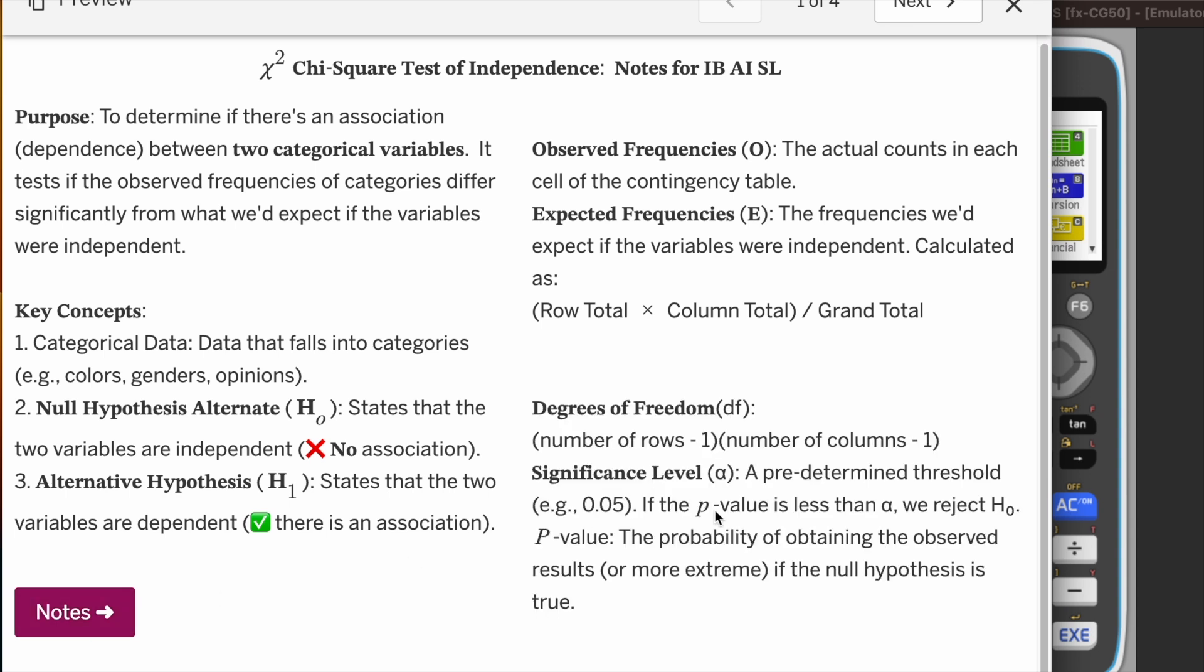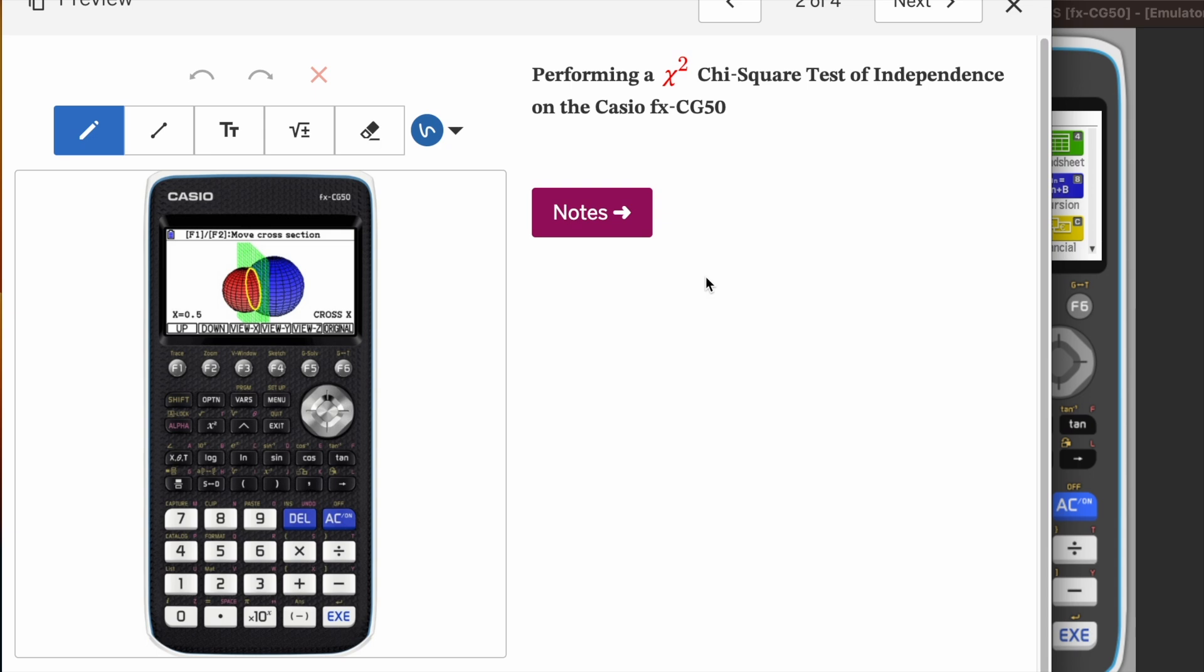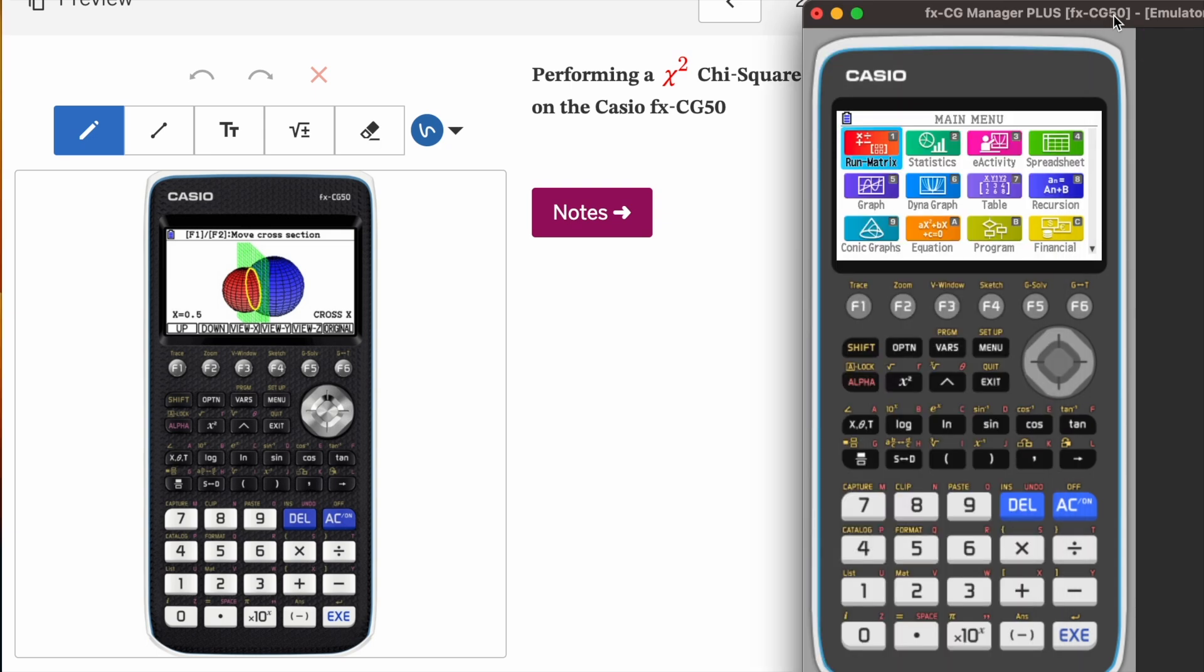These are some key points to keep in mind: degrees of freedom, significance level (always given in the question as 5% or 10%). Depending on significance and the probability value, we will be able to reject or accept the hypothesis.